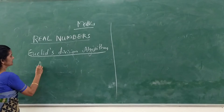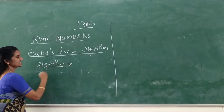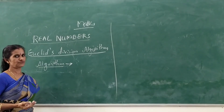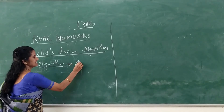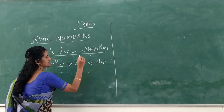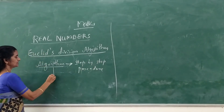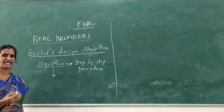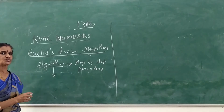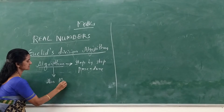An algorithm is a series of well-defined steps which gives a procedure for solving a type of problem. That means an algorithm is a step-by-step procedure for solving a type of problem. The word algorithm comes from the name of the 9th century Persian mathematician Ibn Musa Al-Khwarezmi.